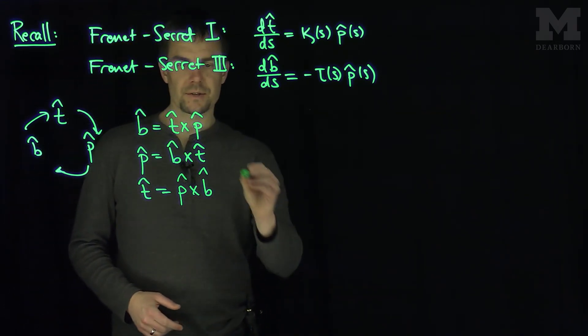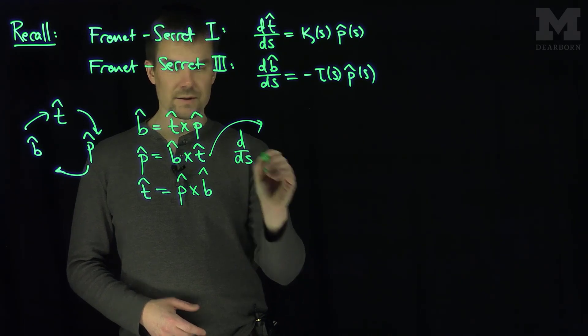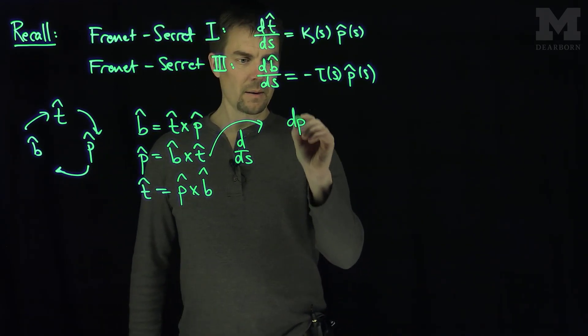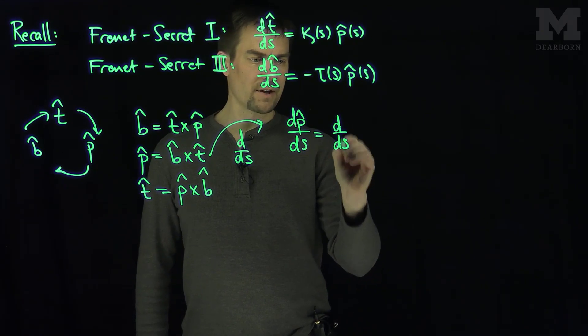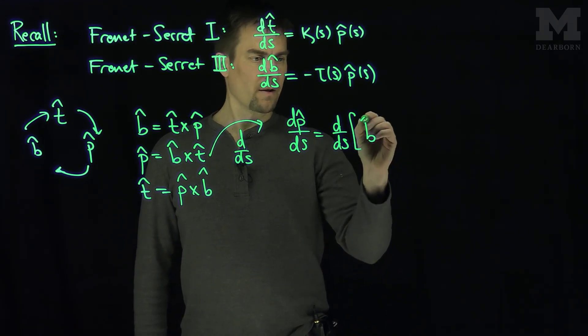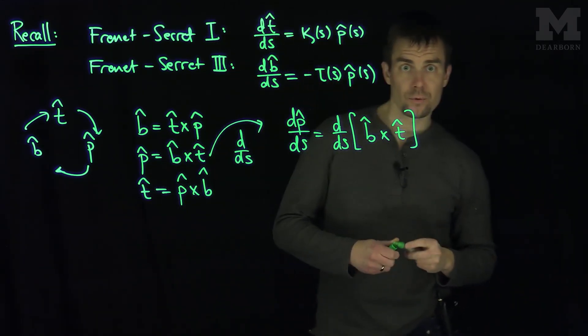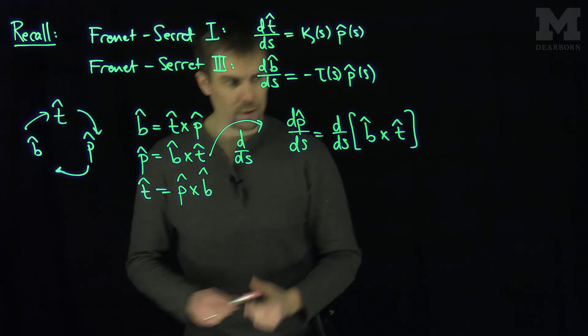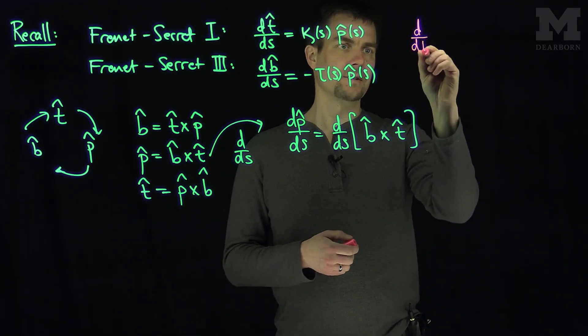Now what I'll do is I'll take this second equation over here, and I'll take the derivative of the second equation with respect to s. So that will give me on the left hand side, dp hat ds is equal to d by ds of this cross product of b cross t. Now we also have a product rule for the cross product.